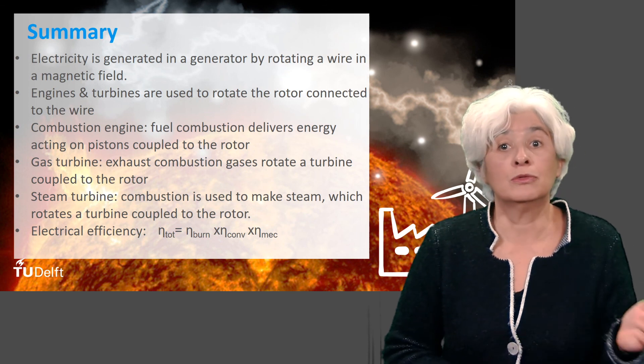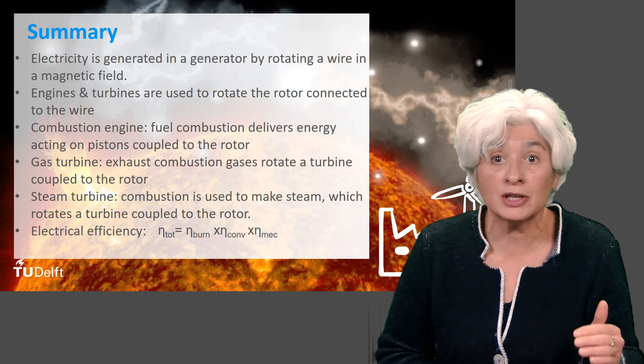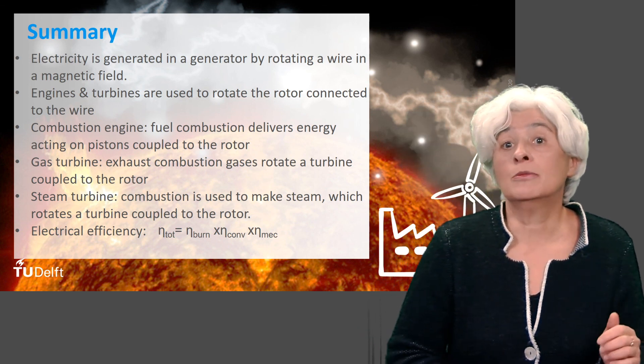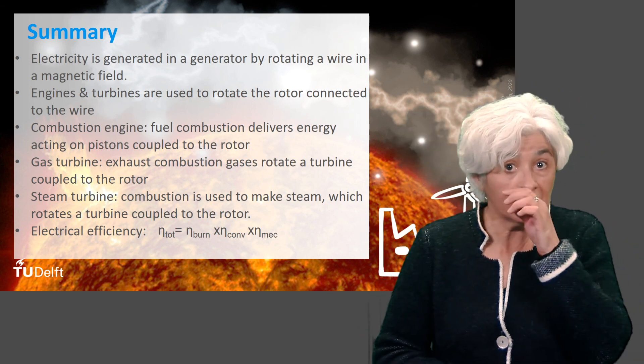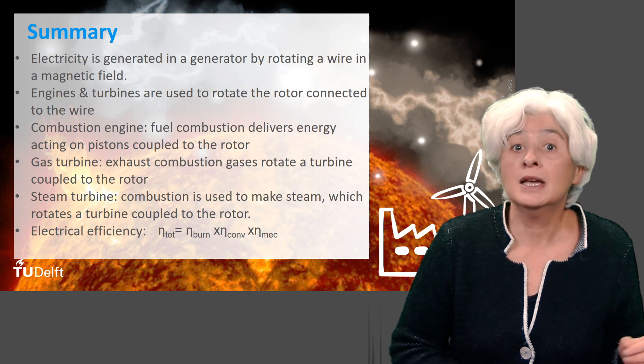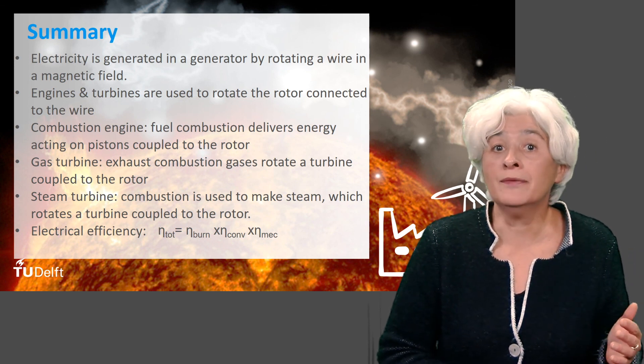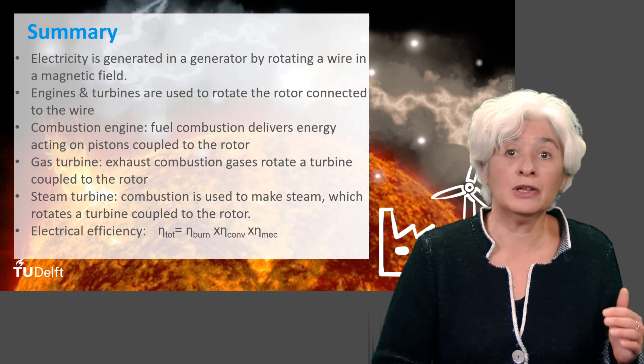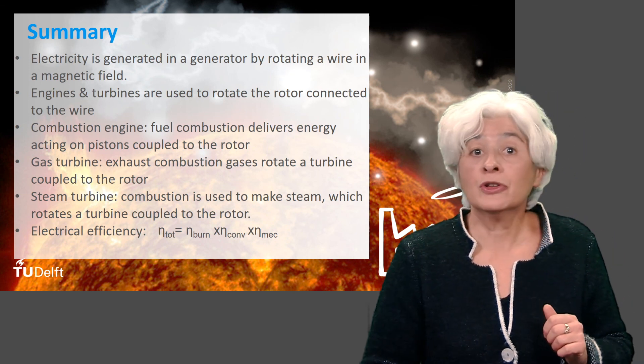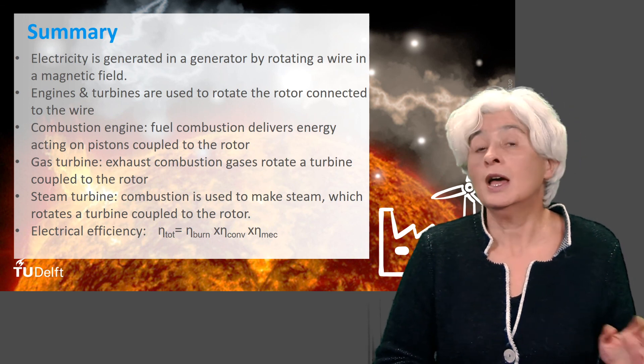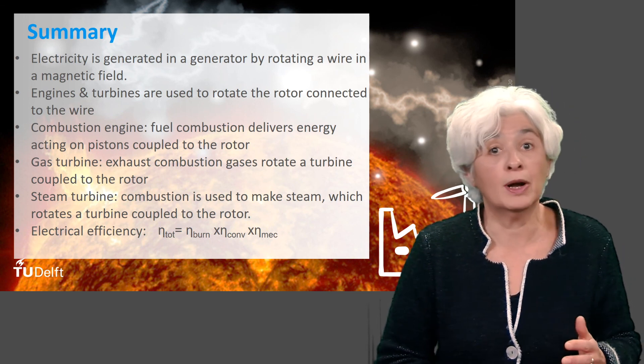The conversion from heat to rotor rotation is much less efficient, being around 0.5. There is a theoretical maximum to this conversion efficiency depending on the temperature levels. And then, there are the mechanical losses, the most important ones taking place in the generator itself. In total, the efficiency of such systems is between 0.25 for the poor ones and 0.45 for the good ones.